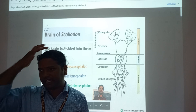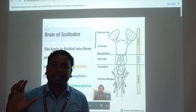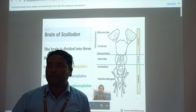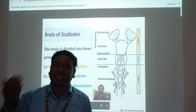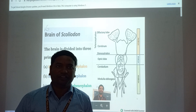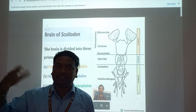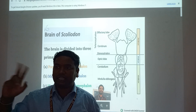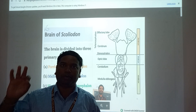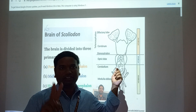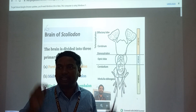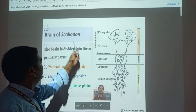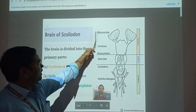The brain has an important cranial part. The human brain weighs 1350 grams. The brain's outer layer is ash-colored and the inner layer is white. The brain has different types of meninges. Humans have 3 meninges: Duramater, Arachnoid, and Piamater. But in Scoliodon, only 2 layers are present. Cerebral fluid production also occurs here.